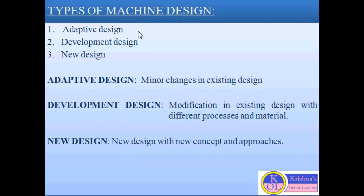The next topic is the types of machine design. There are three types of machine design. The first type is adaptive design, second is development design, and third is new design. Adaptive design is basically based on existing design of the machine or existing design of the machine element, where only minor changes or minor modifications are done by the designer for new applications.